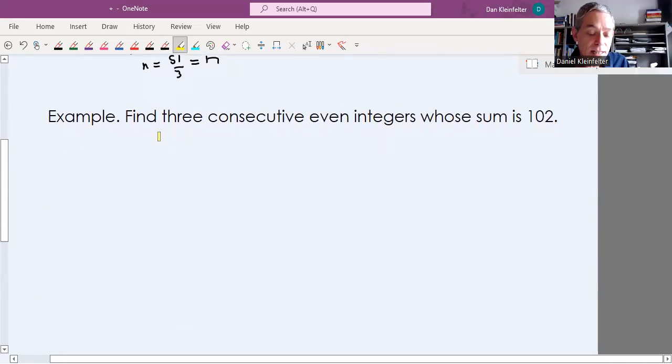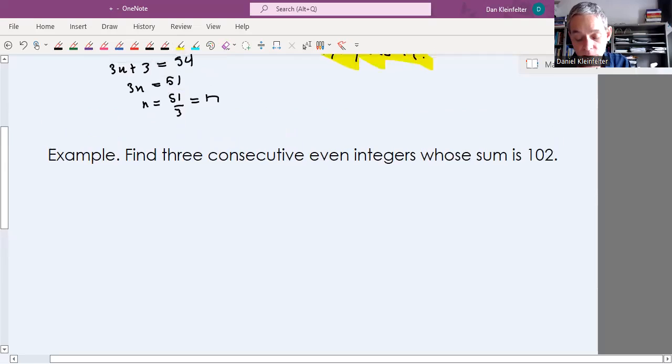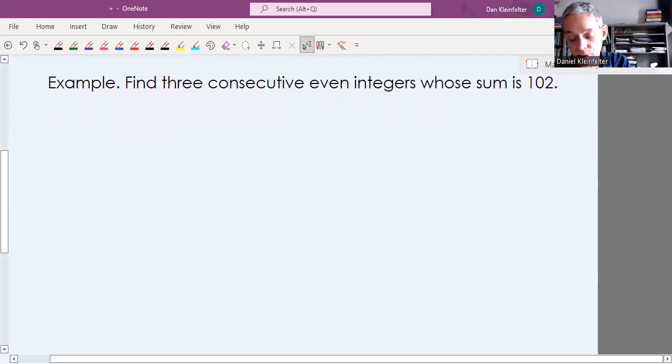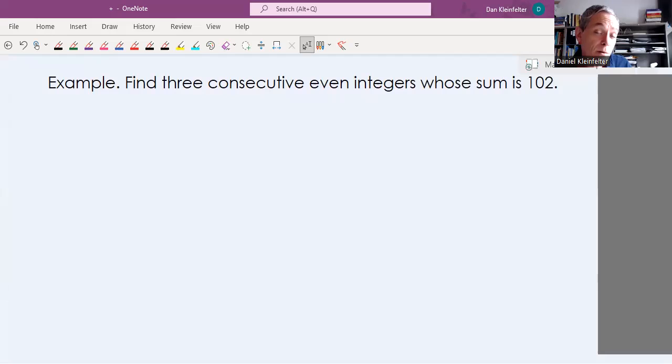All right. So then in our next example, we want to find, it's similar. It says three consecutive even integers. And we want the sum to be 102. So this one is going to be very similar, except that we're looking for even integers. At this point, why don't you pause the video, try to set this up yourself, and see how you do with it. And then start the video and see how you did.